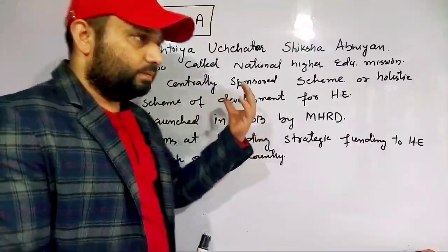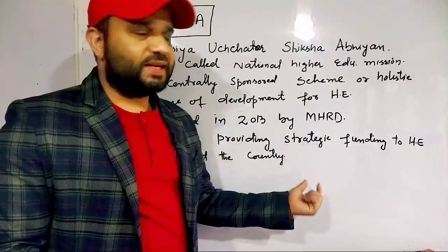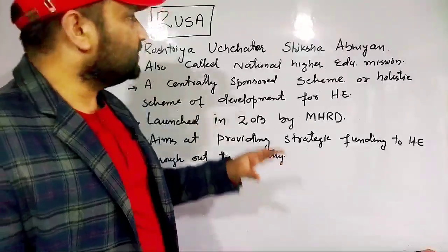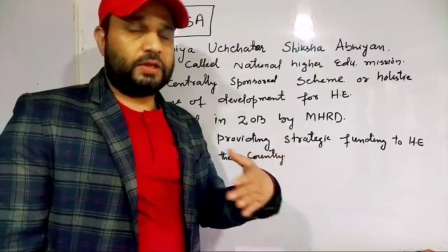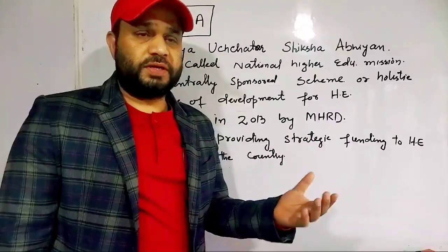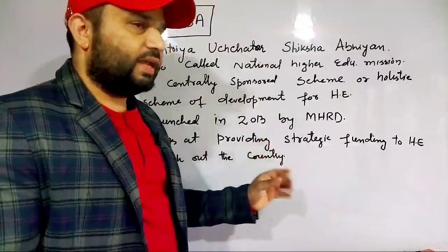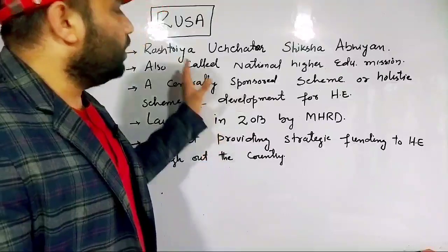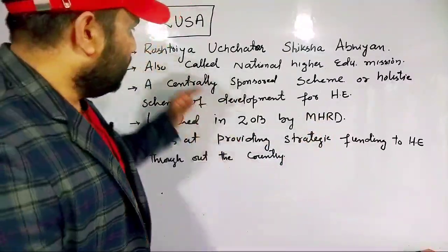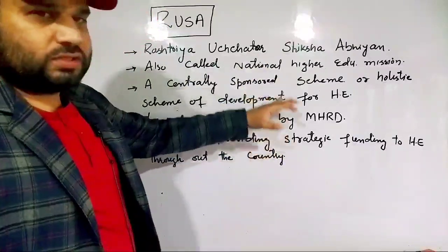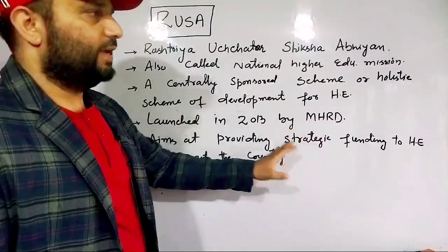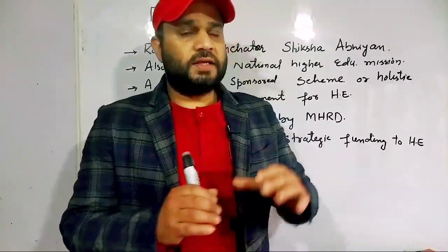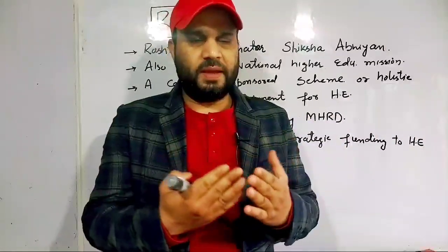When we talk about the long answer, there are chances that RUSA can come as a long answer. You have to write RUSA in detail as a centrally sponsored scheme — what are its main points, its background, introduction, objectives, and funding. It can also come as a short answer. Let's start now.